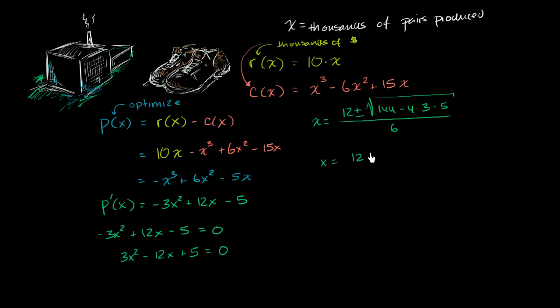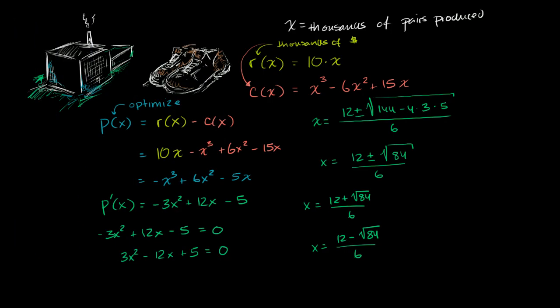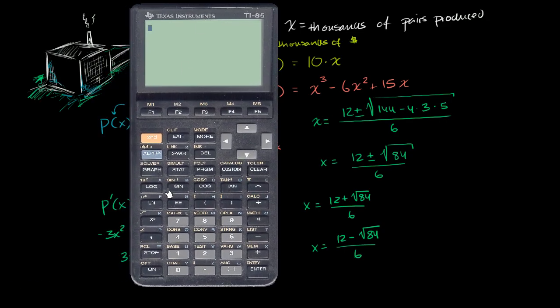So x is equal to 12 plus or minus the square root of, let's see, 4 times 3 is 12, times 5 is 60. 144 minus 60 is 84. All of that over 6. So x could be equal to 12 plus the square root of 84 over 6, or x could be equal to 12 minus the square root of 84 over 6. So let's figure out what these two are.